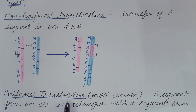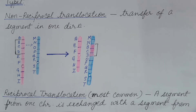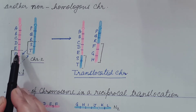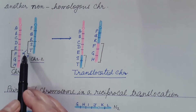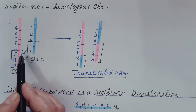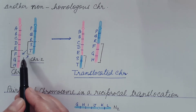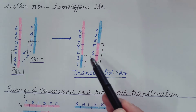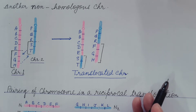The second type is reciprocal translocation, which is the most common. Here, a segment from one chromosome is exchanged with a segment from another non-homologous chromosome. A segment breaks from chromosome one and attaches to chromosome two, and simultaneously a segment from chromosome two breaks and attaches to chromosome one. The segment transfer takes place in both directions, giving two translocated chromosomes. This is known as reciprocal translocation.